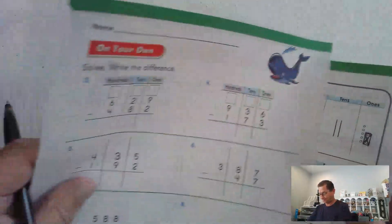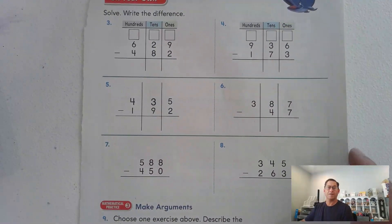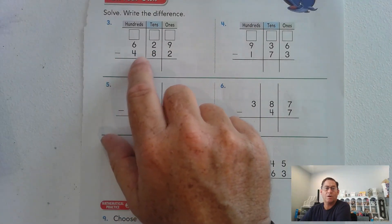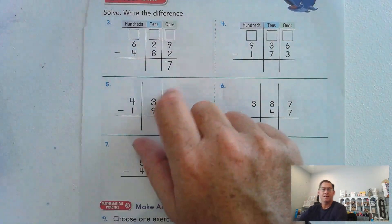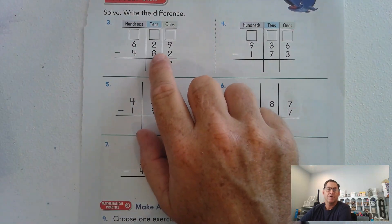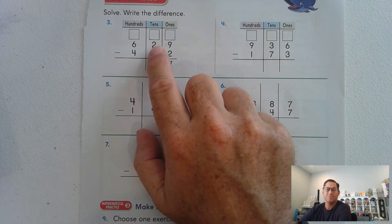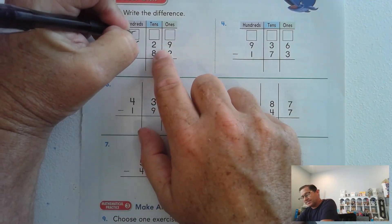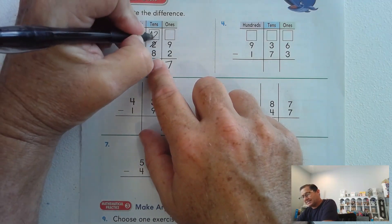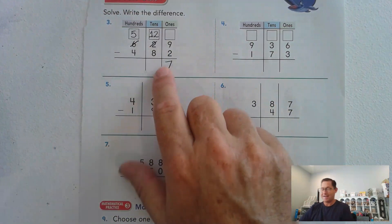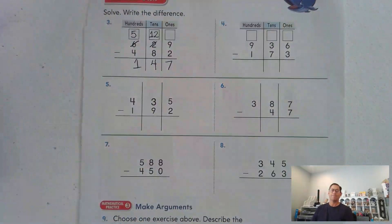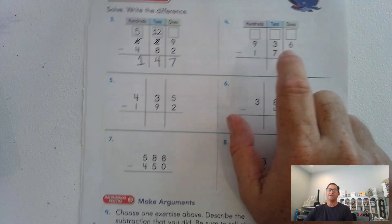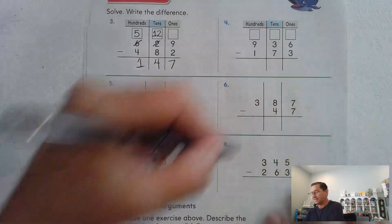Let's go to page 315. Write the difference for: 629 minus 482. We have 9 ones — can we take away 2? Yes. But 2 tens minus 8 tens — we can't do that, so let's regroup from the hundreds. Trade one of the hundreds for 10 tens. So 12 minus 8 is 4, and 500 minus 400 is 100. Answer: 147.